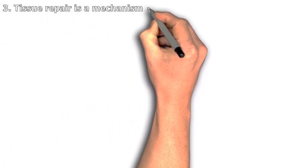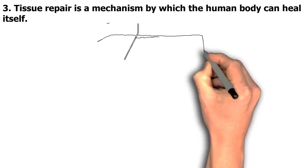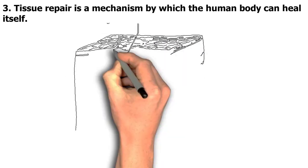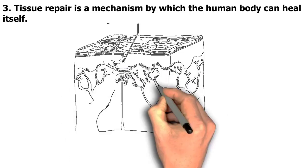3. Tissue repair is a mechanism by which the human body can heal itself. Fibroblasts and macrophages, two specialized cells, are drawn to the site of the damage in this intricate process.